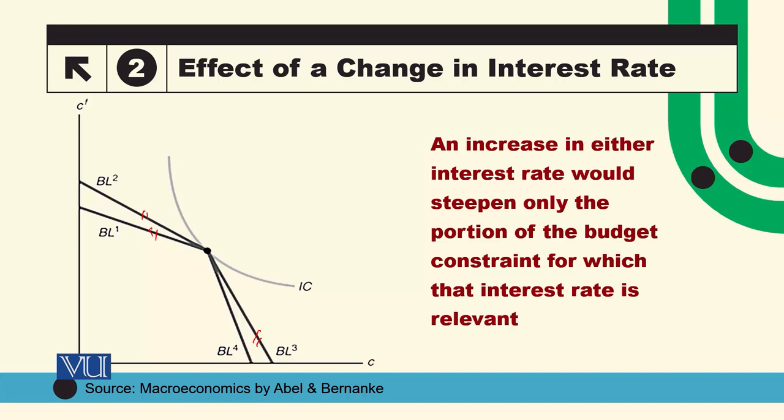تو آپ یہ بھی سمجھ رہے ہوں گے کہ جب borrowing rate increase کرتا ہے تو اب اس کے پاس available resources کم ہو جائیں گے — پہلے وہ یہاں تک at the most consumption کر سکتا تھا، لیکن borrowing rate increase ہونے کی وجہ سے اب وہ relatively less consumption کر سکتا ہے کیونکہ اب اس کے لیے borrowing expensive ہو گئی ہے۔ لیکن lending rate کے بڑھنے سے وہ پہلے سے زیادہ consumption کر سکے گا۔